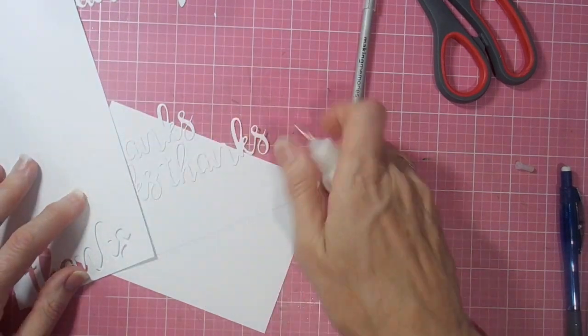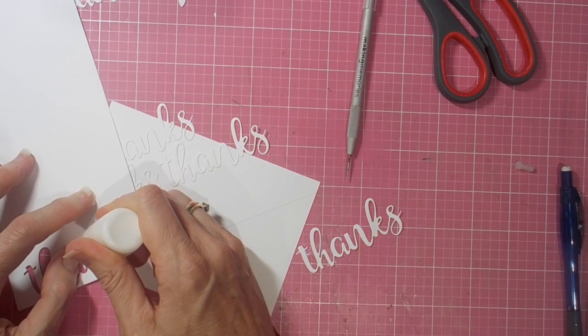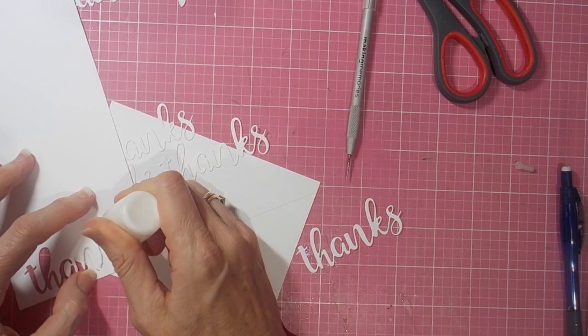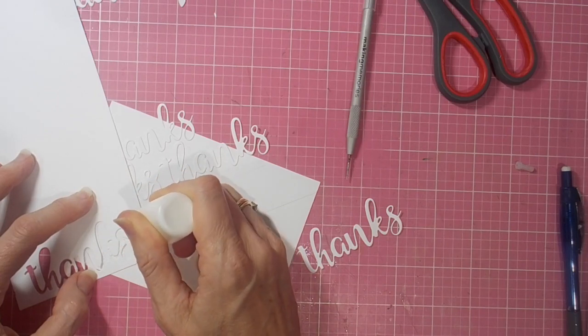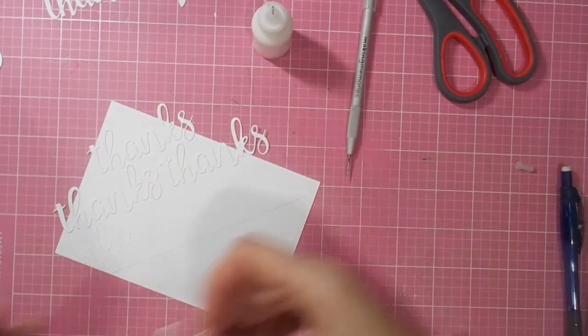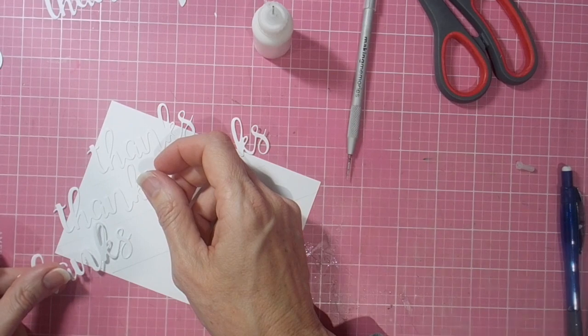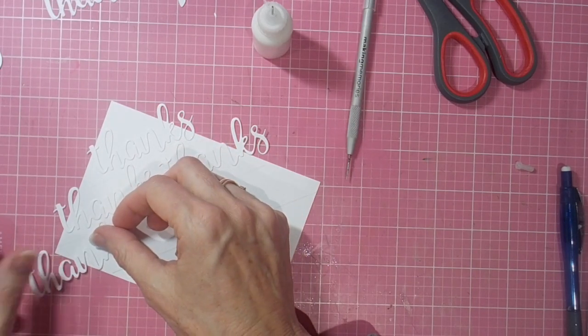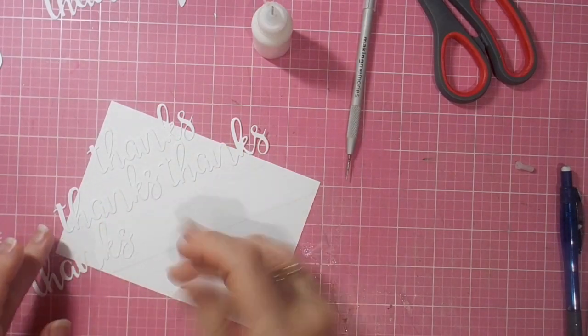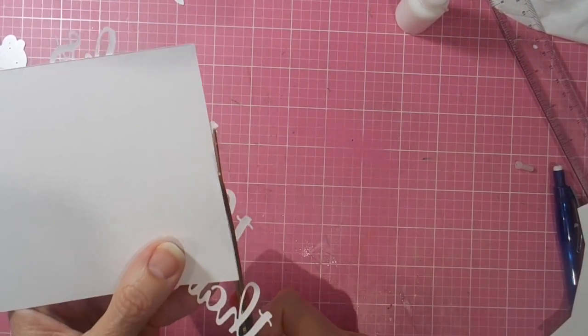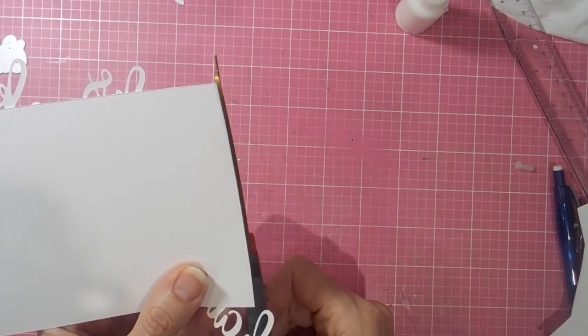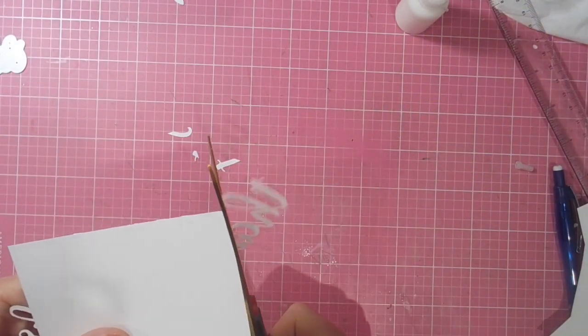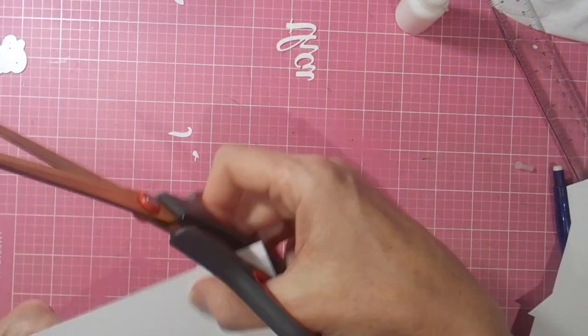Of course you do want to make sure, as I'm doing here, that you don't end up with the words all lined up underneath each other. You do want to stagger the sentiment. It just gives you a much nicer look if you can do that, so you've got to be aware of that as you work out the placement of each line of words.